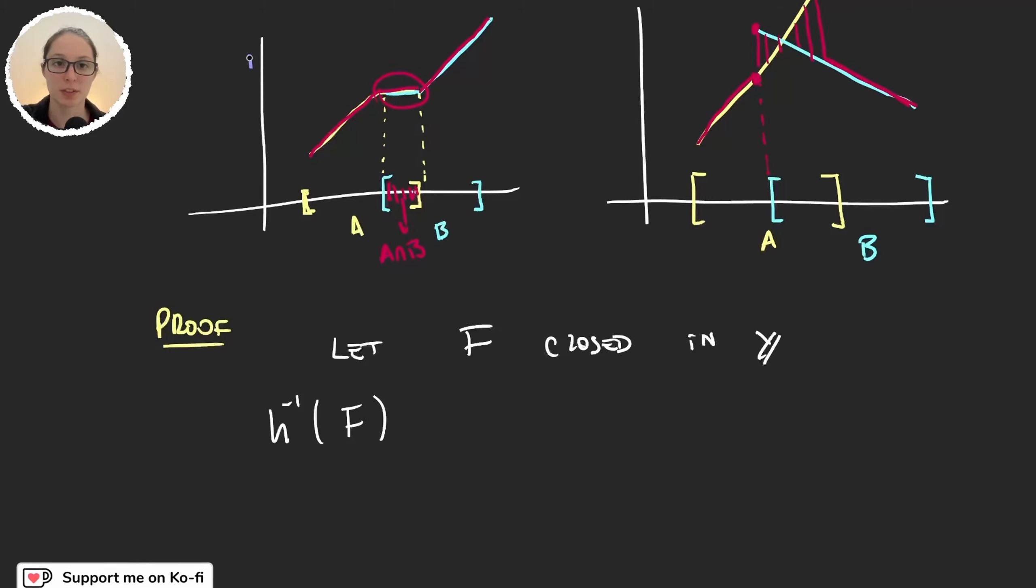For this we can use this drawing. So let's say I have here a closed set f, and what I want to do is get the preimage of this set. And this will be this set here. Okay, my drawing is a bit off, but you get the idea. So this set here in the domain is the preimage of f through h.